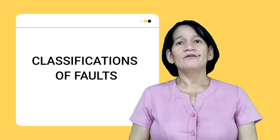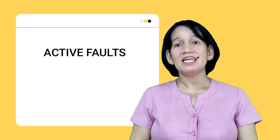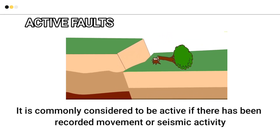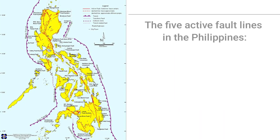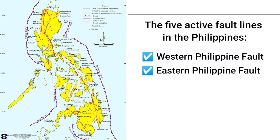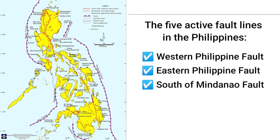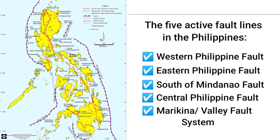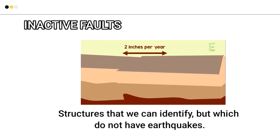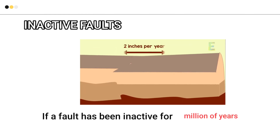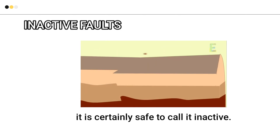Let us now describe and differentiate the classification of faults. First, you have active faults, and second, inactive faults. A fault is commonly considered active if there has been recorded movement or seismic activity during the last 10,000 years. The five active fault systems in the Philippines are: Western Philippine Fault, Eastern Philippine Fault, South Mindanao Fault, Central Philippine Fault, and the Marikina Valley Fault System. An inactive fault is a structure that we can identify but which does not have earthquake activity. If a fault has been inactive for a million years, it is certainly safe to call it inactive.